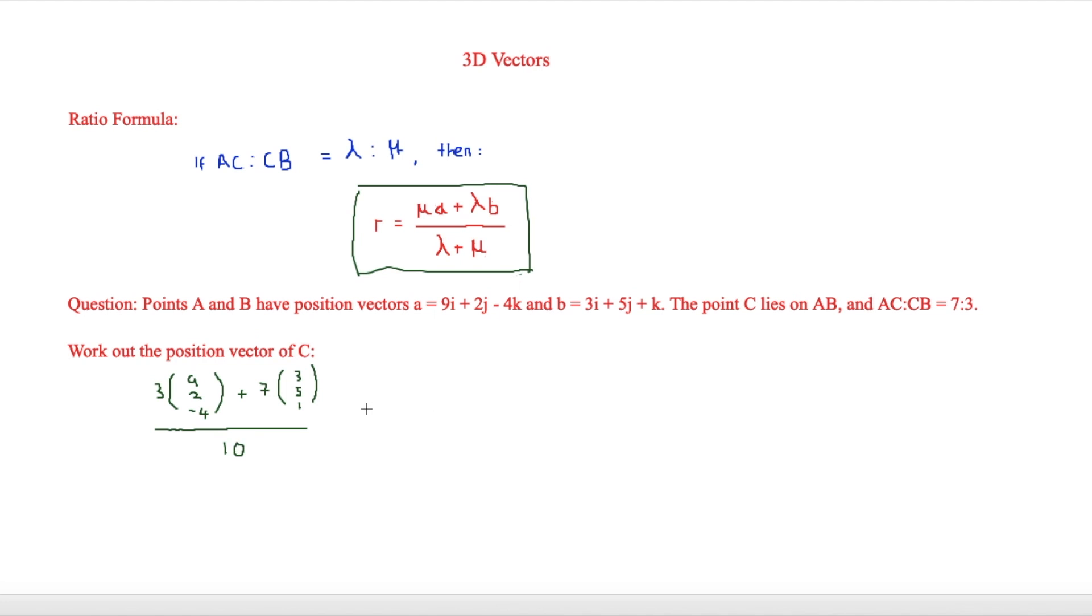That is then all over 10. So then this is going to be equal to 27, 6, and minus 12, as that's 3 times everything. Plus, then 7 times 3 is 21, 7 times 5 is 35, and 7 times 1 is obviously 7. Again, this is all over 10.